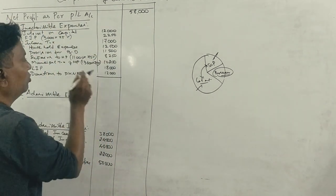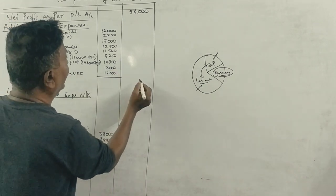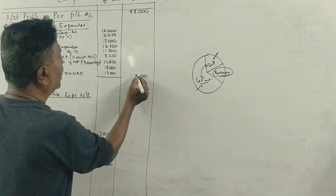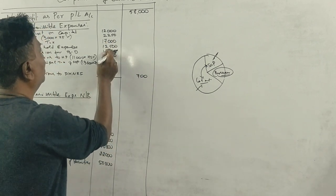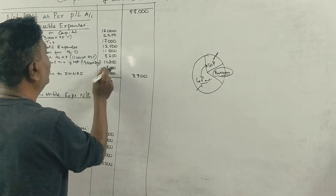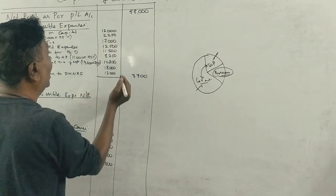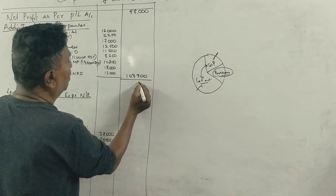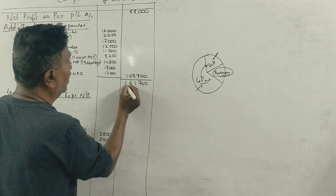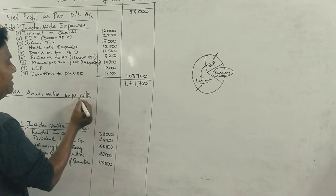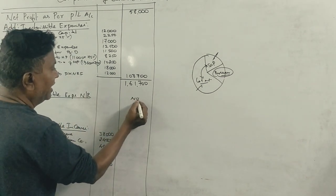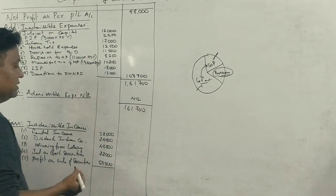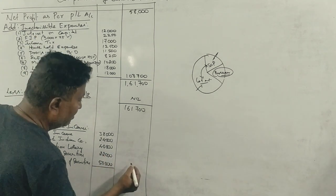Now we compute the total income from business. Starting with net profit, we add back inadmissible expenses and deduct inadmissible income. After all adjustments, if admissible expenses not recorded are accounted for, the total comes to approximately Rs. 1,617. After deducting inadmissible income, the taxable income from business results in a negative figure — meaning there is a loss from business rather than a profit.